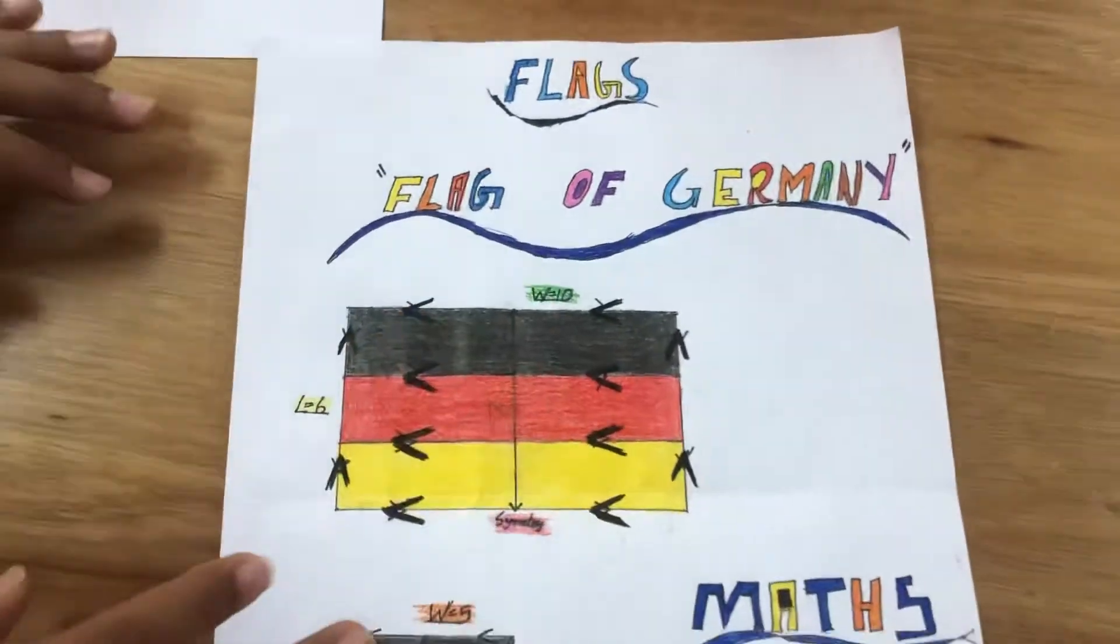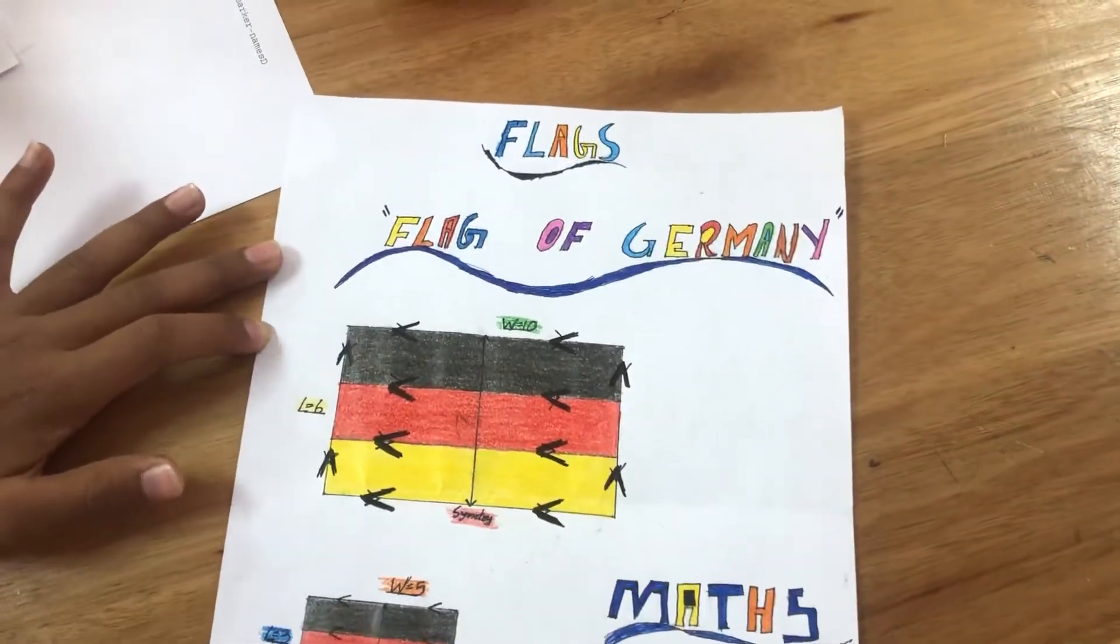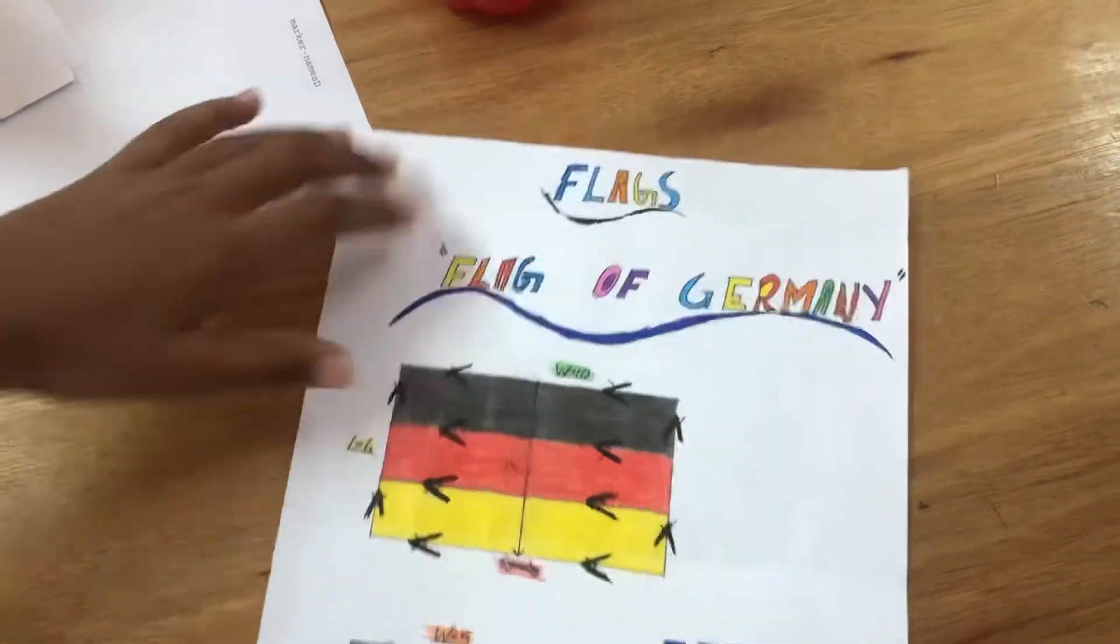So I have a flag of Germany and I'm going to show you the parallel lines in it. So there are a total of 4 parallel lines. This is the 1, 2, 3 and 4 parallel lines. Okay, so horizontal and vertical parallel lines. Next, what have we got?